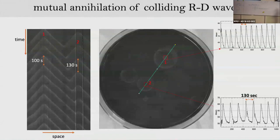Regarding boundary conditions: this is a petri dish of around nine centimeters. At the boundaries, some chemicals can accumulate, which is why waves often start from the boundary. Similarly, if there is dust or dirt inside the solution, it very often also becomes a wave center.